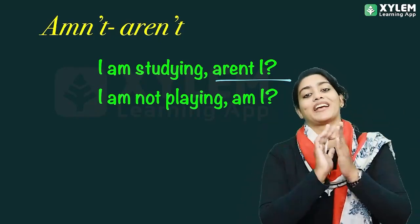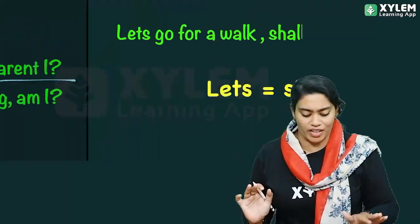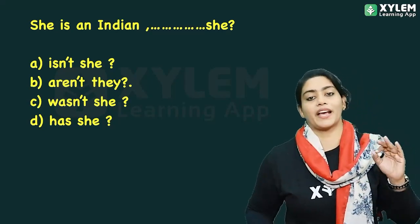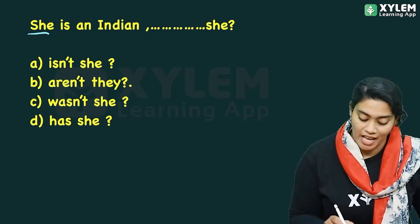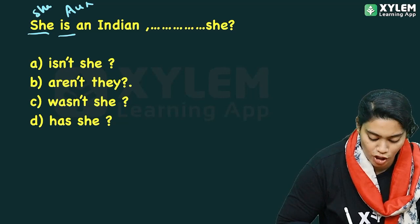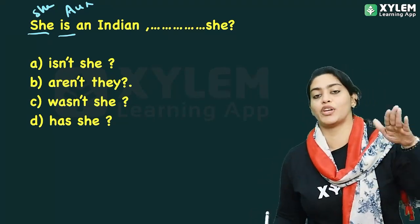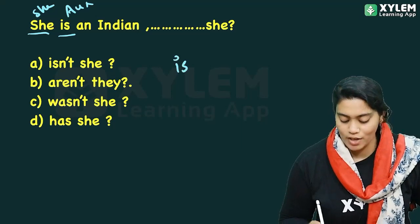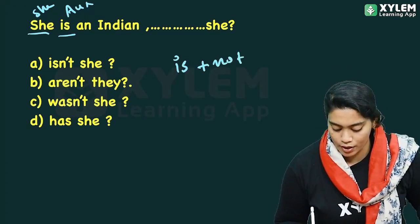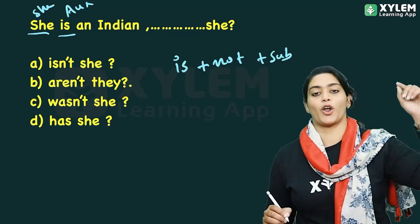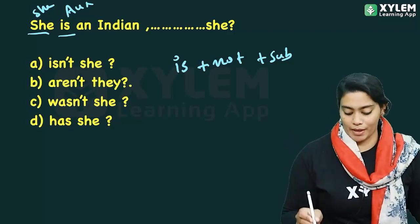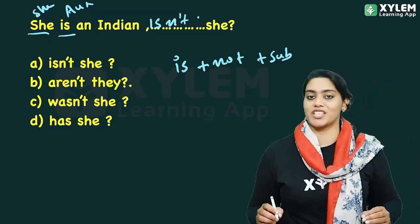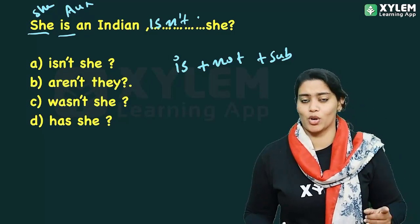Now we have a question tag example. 'She is intelligent' — 'She' is the subject, 'is' is the auxiliary verb. The sentence is positive, so the tag should be negative. The auxiliary verb is 'is,' plus 'not' gives us 'isn't,' plus the pronoun 'she.' So the tag is 'isn't she.' Clear?